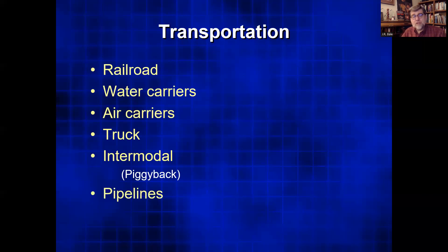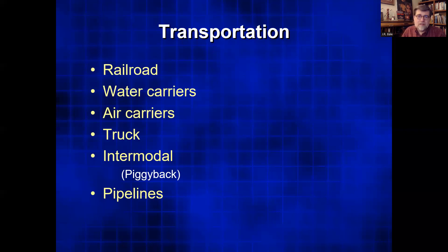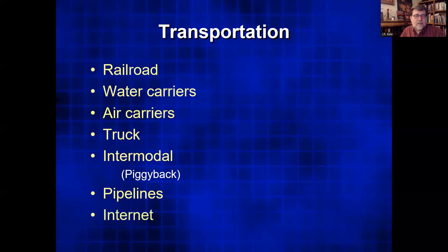Another form of transportation — you don't even think of it as transportation because it's stationary — is pipelines. Gas, water, and other substances can all be transported via pipelines. If you expand your definition of a pipeline, you could include electricity. In addition, we have the internet.